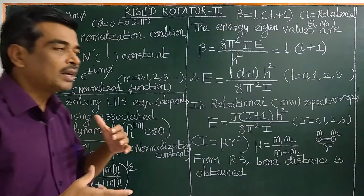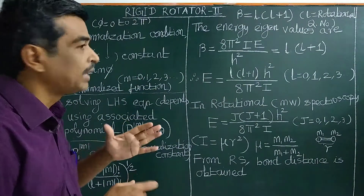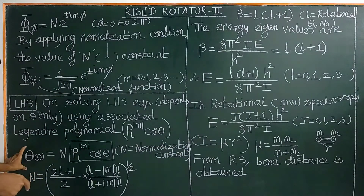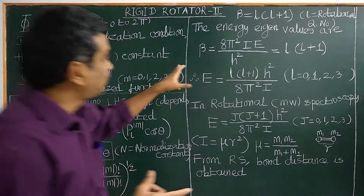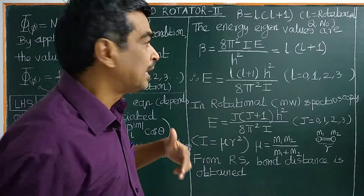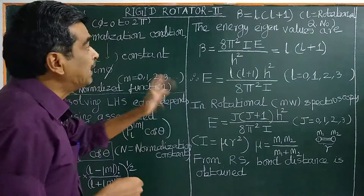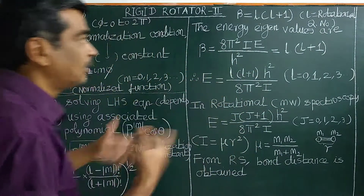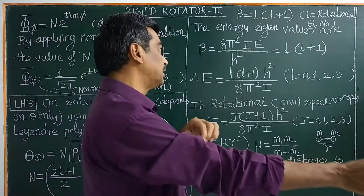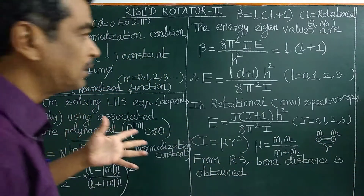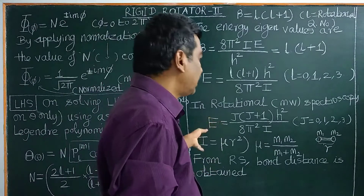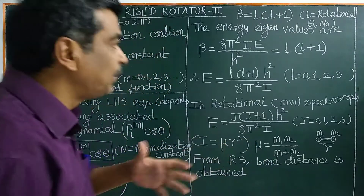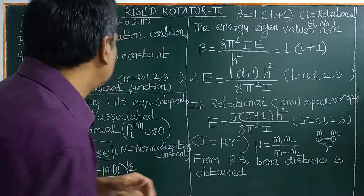On solving the Schrödinger wave equation for rigid rotator, H-cap psi equal to E psi, we obtain the phi function. Next, we will obtain the theta function, and then the eigen energy values. From the eigen energy values, the rotational spectrum can be obtained theoretically, without doing experiment. I have also given rotational spectroscopy in another video — I will provide a link.